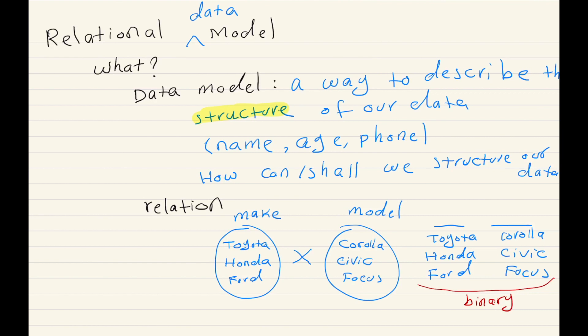We can have n-ary relations as well. When I have a relation defined over the Cartesian product of n sets, that's going to be an n-ary relation. For example, a relation that I define for name, age, and phone — that's going to be a ternary relation, defined over three sets.